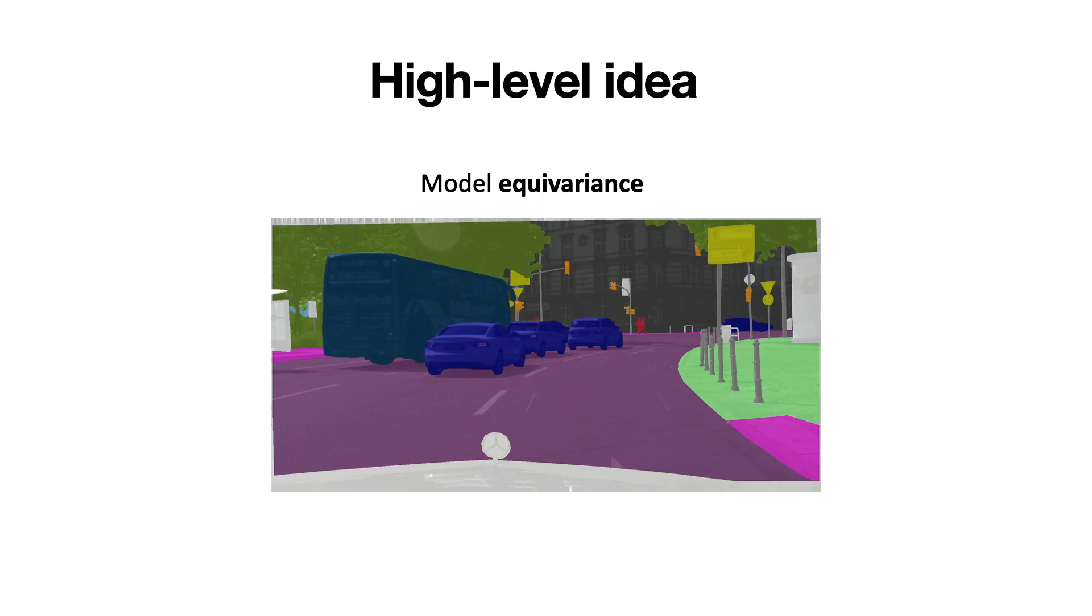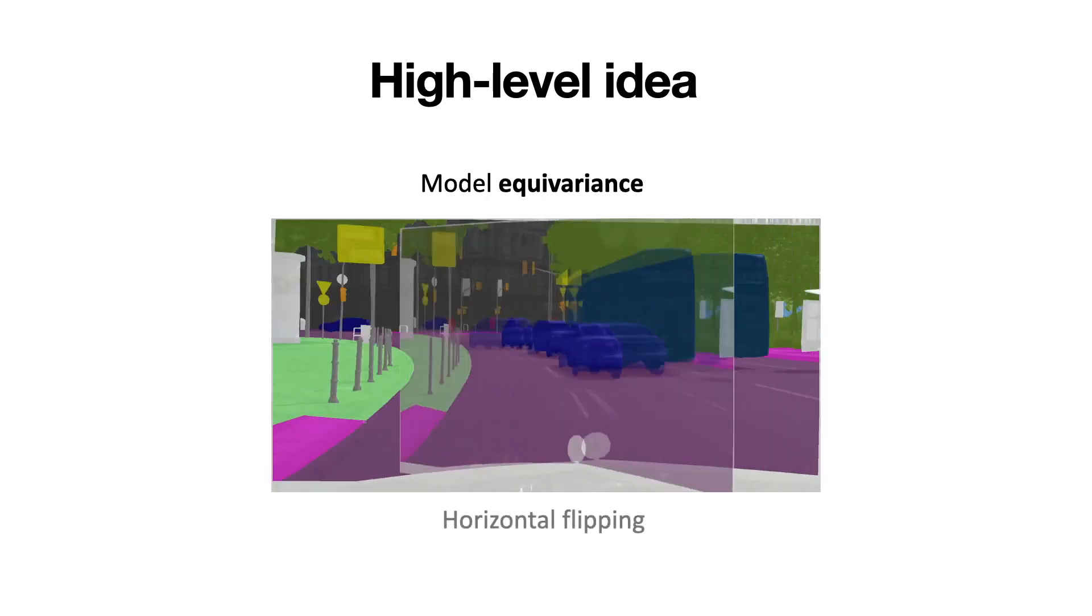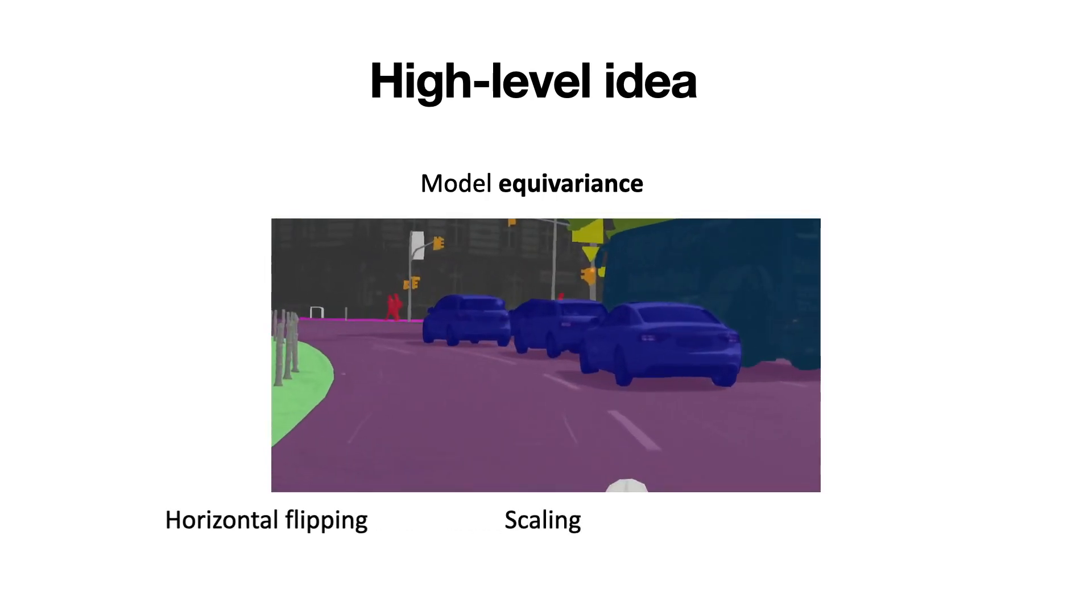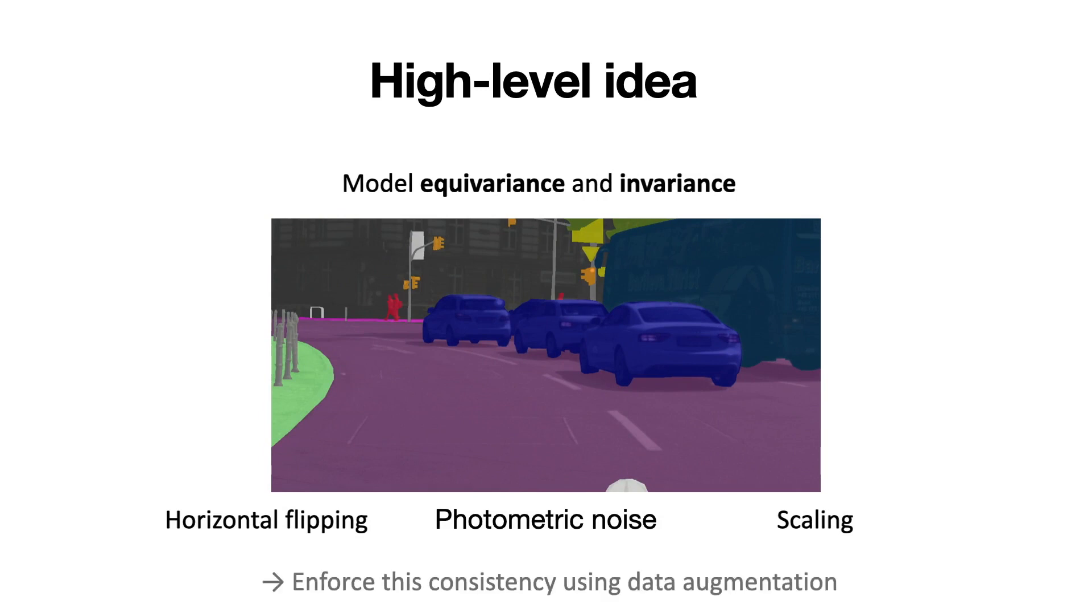The high-level idea of our approach is to exploit equivariance of semantic segmentation models to similarity transformations which include horizontal flipping, scaling, as well as invariance of the model to photometric noise. We develop a framework that enforces this consistency using data augmentation, what we refer to as augmentation consistency.